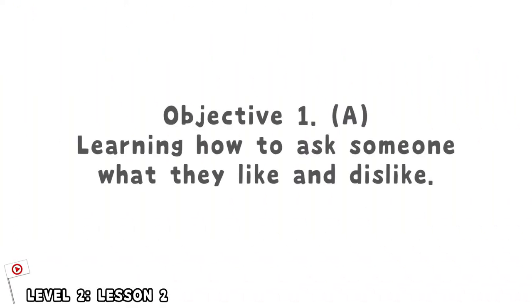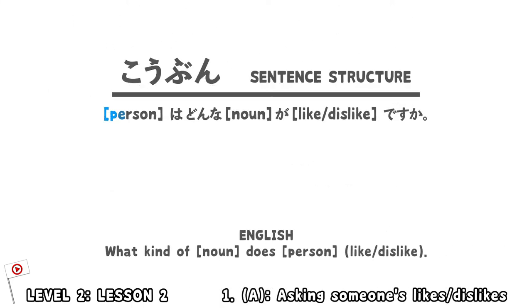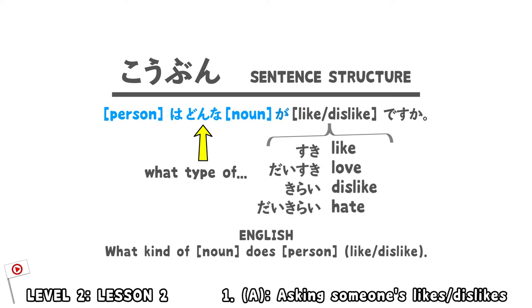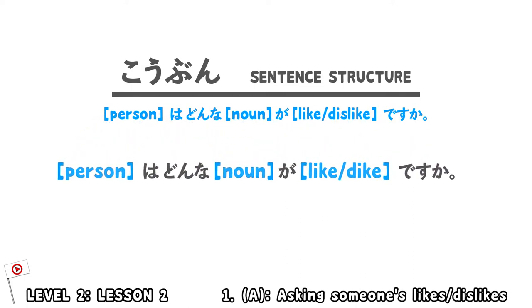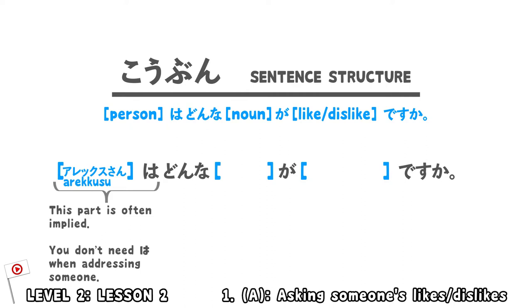Learning how to ask someone what kinds of things they like and dislike. Here's the sentence structure: Person + wa + donna (what type of) + Noun + ga + suki / daisuki / kirai / daikirai + desu ka? Let's say you wanted to nonchalantly ask your crush what kind of person they like. Let's fill in the blanks — let's say your crush's name is Alex.